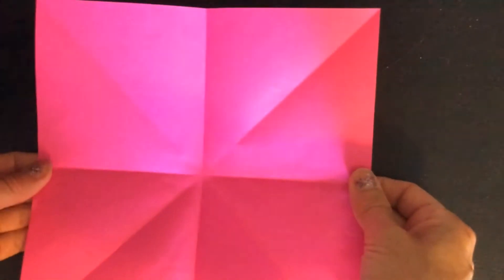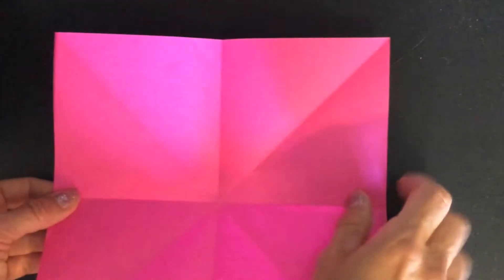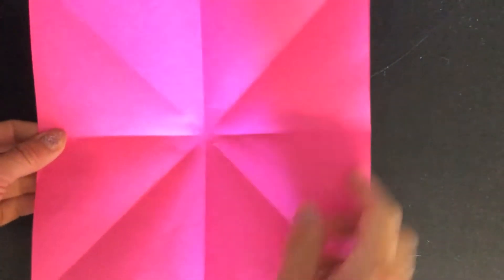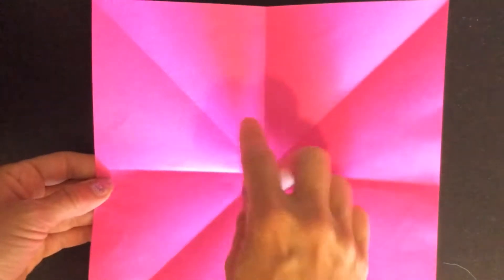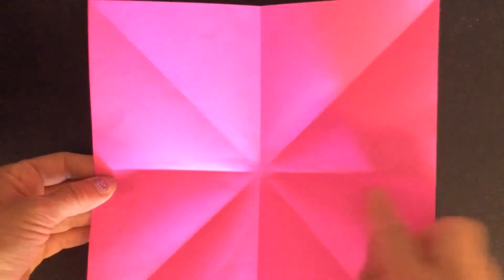Fold it and now turn it so that the flat edge is along the top and bottom. Then you're going to bring this side toward this side and bend your creases here.